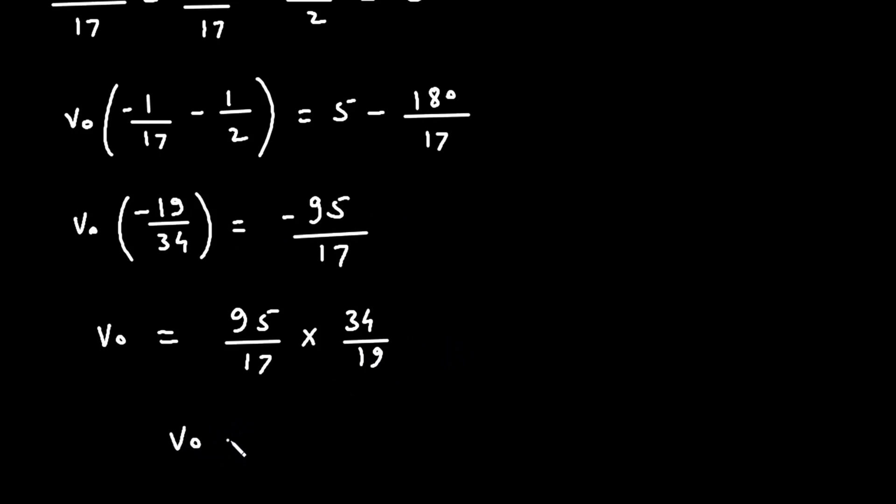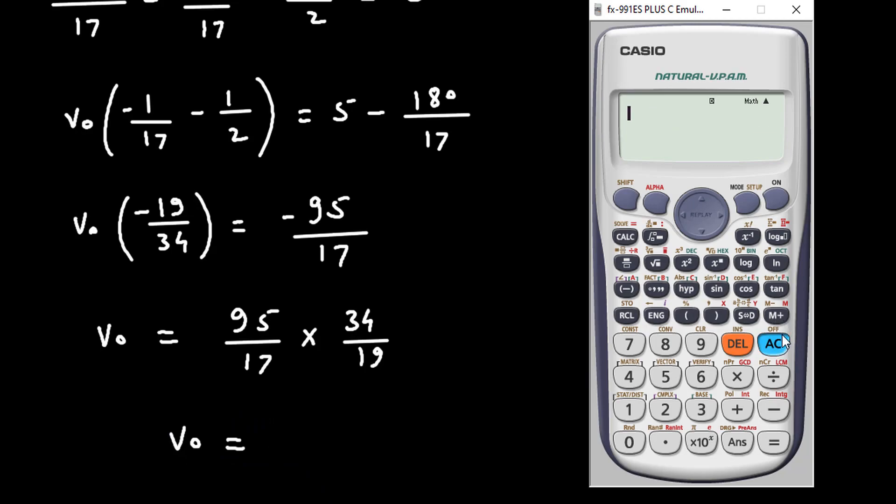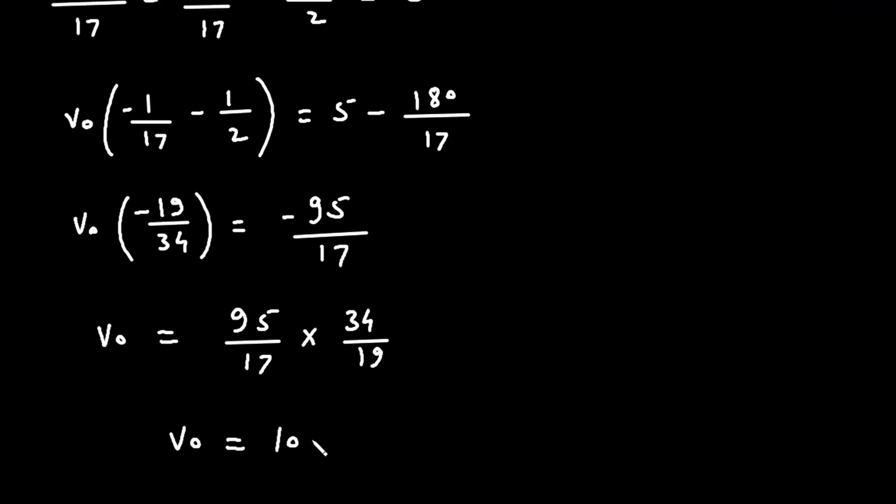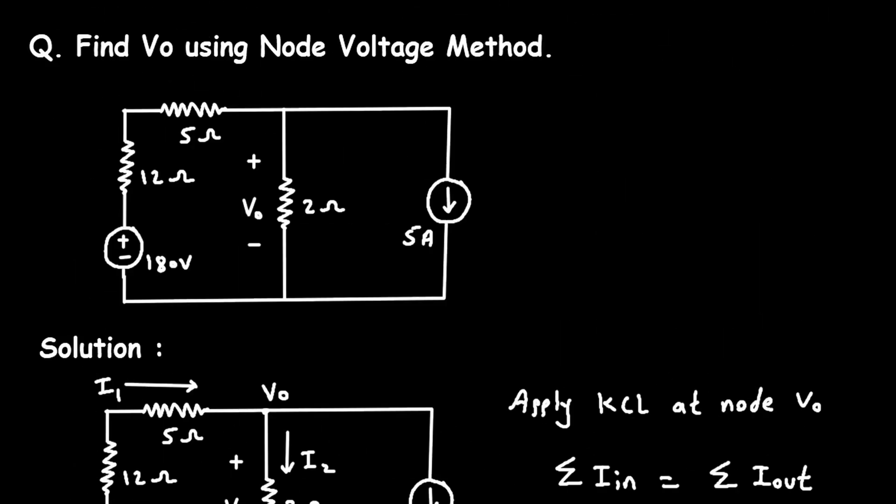If we solve this, we get the value of VO. 95 divided by 17 multiplied with 34 divided by 19. So, it is equal to 10 and its unit will be volts because it is a voltage. Therefore, VO is equal to 10 volt by using node voltage method or nodal analysis.